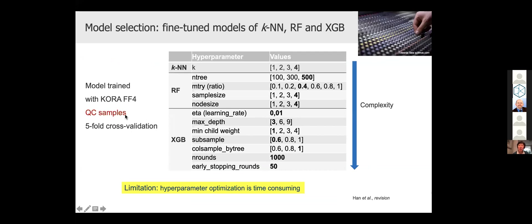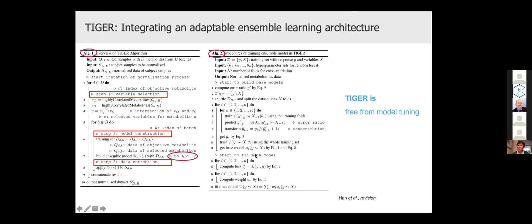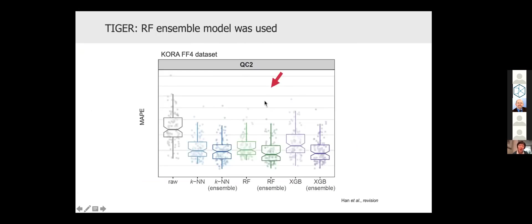In fact, Shiyu spent lots of time to fine tune each of the three models using the QC samples with five-fold cross validation. In general, hyperparameter optimization is very time consuming in machine learning. TIGER overcomes this drawback by integrating adaptable ensemble learning architecture and TIGER is free from model tuning. Overall, you can see with all three models ensemble learning architecture, random forest achieved the best performance for the QC2 sample in the KORA-S4 dataset. Therefore, Shiyu selected random forest to build the TIGER model.